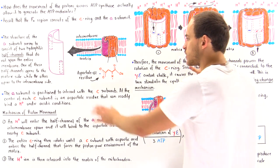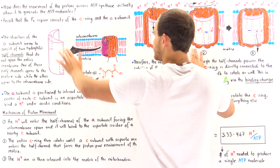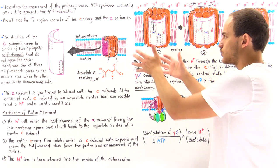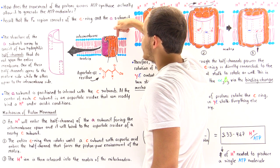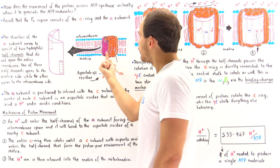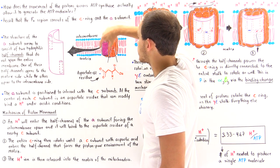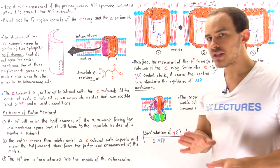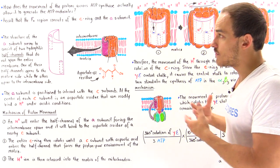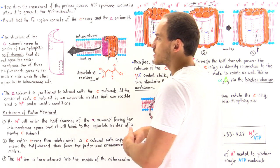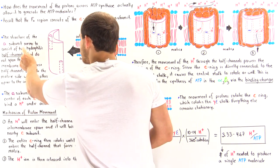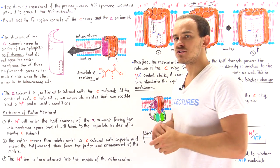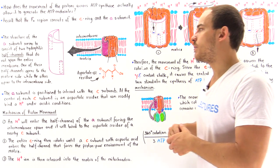We have the inner membrane of the mitochondria. This is the matrix of the mitochondria and this is the intermembrane space. This entire structure is the F0 region, which lies within the inner membrane of the mitochondria. I've drawn 10 of these individual C subunits that form the C ring, and the A subunit is found in close proximity to this C ring. The structure of the A subunit seems to consist of two hydrophilic half channels that do not span the entire membrane — one open to the matrix side and the other open to the intermembrane side.